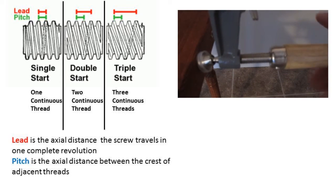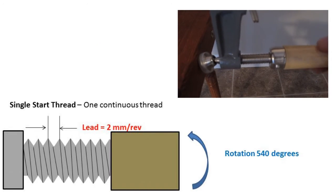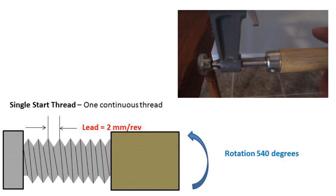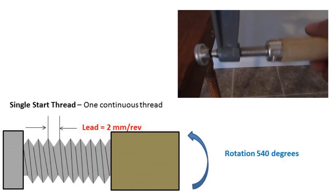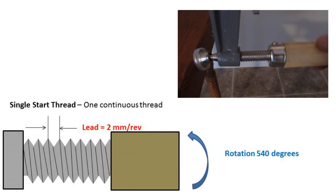To calculate the linear distance, we can take the number of rotations times the lead distance to get the linear distance. So let's say in our clamp example, we have a screw with lead distance of two millimeters and it's rotated 540 degrees.